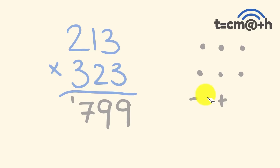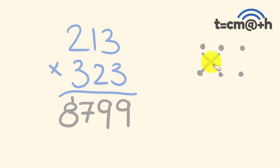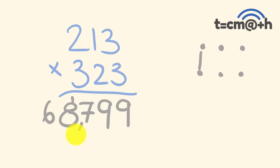For the thousands part of our answer, we're going to be multiplying hundreds times tens and tens times hundreds — both giving thousands answers. So 2 times 2 is 4, and 1 times 3 is 3, plus that carried 1. So 4 plus 3 is 7, plus 1 is 8. And for the last part — the tens of thousands — we multiply the hundreds by the hundreds: 2 times 3 is 6. There's our answer: 68,799.